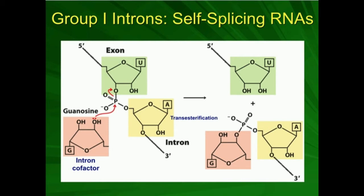We're going to look at group 1 here. Group 1 is going to be relatively simple — a simple transesterification. In this picture, there is a uracil, and everything going in that direction is an exon, the part we want in the mRNA that's going to code for protein. Starting at the adenine and going the other way is the intron, which we want to get rid of. There is what we call a free intron cofactor, and guanosine is the most active example — just a free guanosine, not part of an RNA chain of any kind.